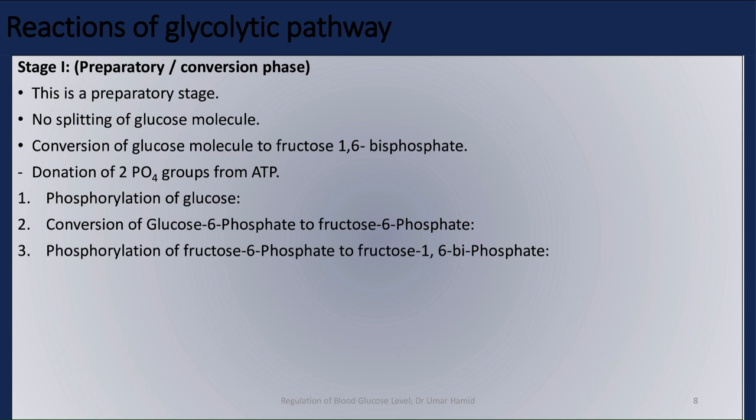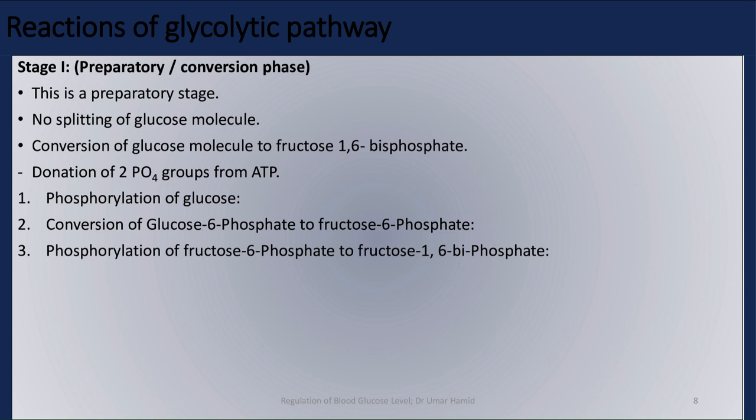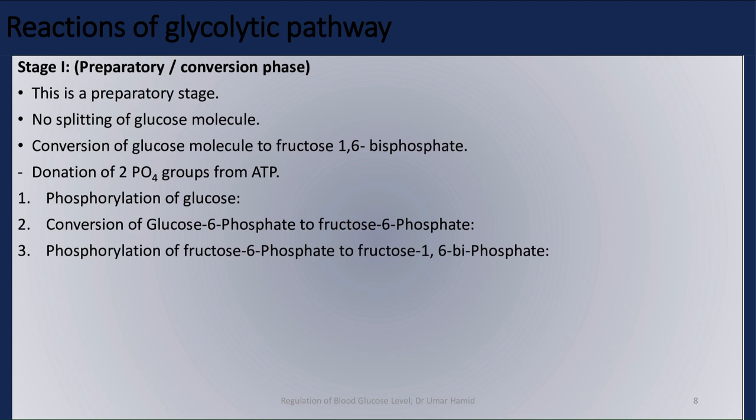Stage I consists of three steps: Step 1 is the phosphorylation of glucose. Step 2 is the conversion of glucose-6-phosphate to fructose-6-phosphate. Step 3 is the phosphorylation of fructose-6-phosphate to fructose-1,6-bisphosphate.